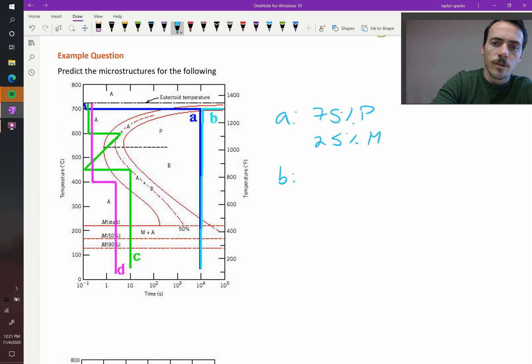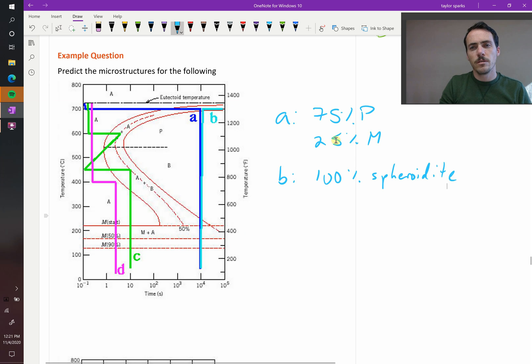Now B, how's B going to be different? B is the exact same as A, except then we heat it up and we hold it for some long amount of time. So then we're going to get 100% spheroidite. So you might say, why don't you get 100% tempered martensite or something? The reason why is because if you're holding anything at really high temperature for long enough, all of your lamella, all of your things like your tempered martensite, which is coarse dispersions, they're all going to coarsen. You're giving them enough thermal energy that it's going to end up as spheroidite.